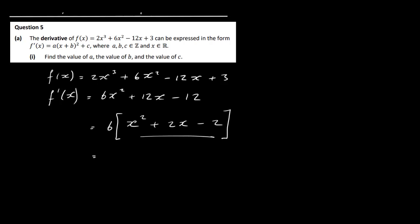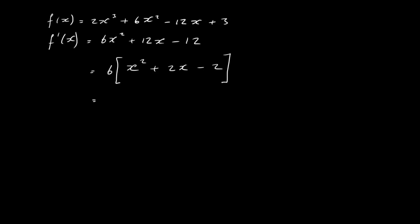Now we can deal with the quadratic expression inside. The way we do this is to take the coefficient of x, which is plus 2, halve it to get 1, and square it to get 1 — then add it and subtract it. So we have x squared plus 2x, and we add 1 and subtract 1, along with the minus 2. All we've done is add and subtract 1, so the expression is unchanged.